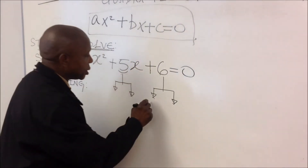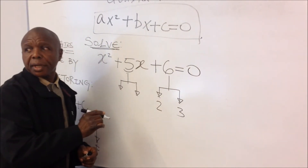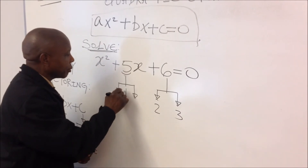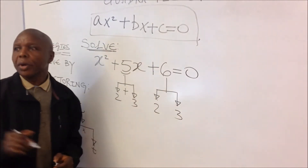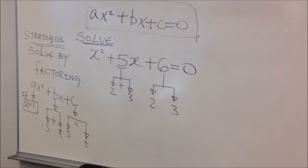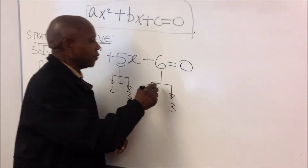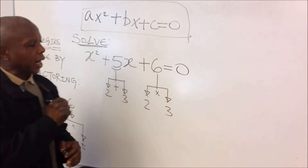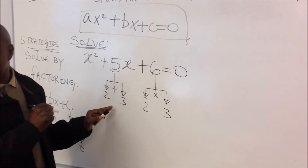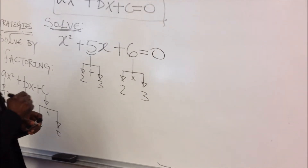So the numbers will be 2 and 3. Two times three gives us 6, and two plus three gives us 5. Those are our candidates.